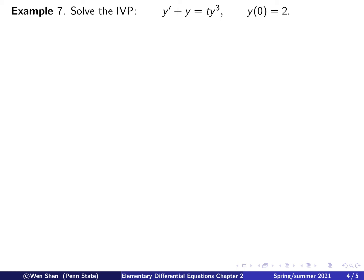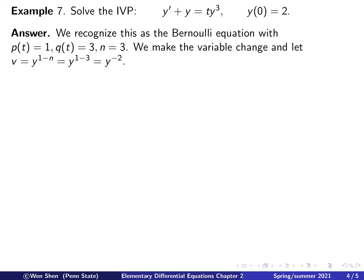So here's the example. We consider the initial value problem with the initial condition given, and we want to solve it. So we recognize this as the Bernoulli equation. If you compare this to the standard form we set up, so here we'll have p(t) is 1, q(t) is 3, and n equals 3. Following the derivation, we can make a variable change, and we set v to be y to the power 1 minus n, and put in n equals 3, and we have v equal y to the power negative 2.